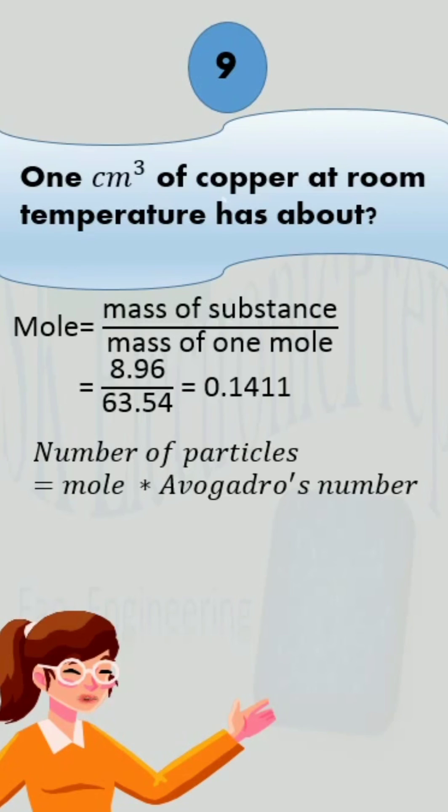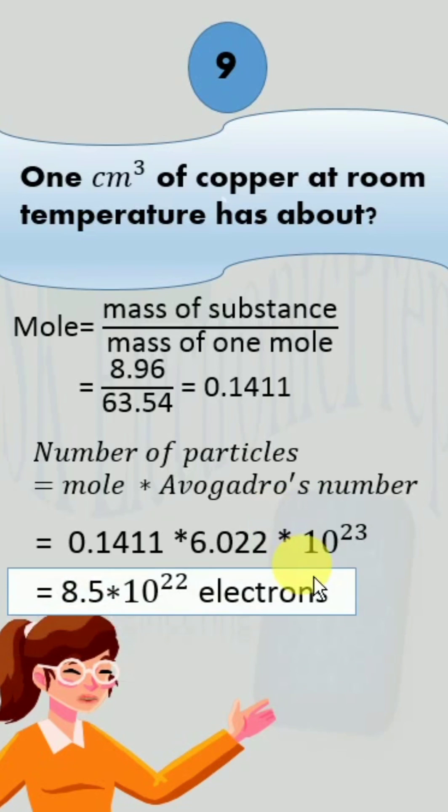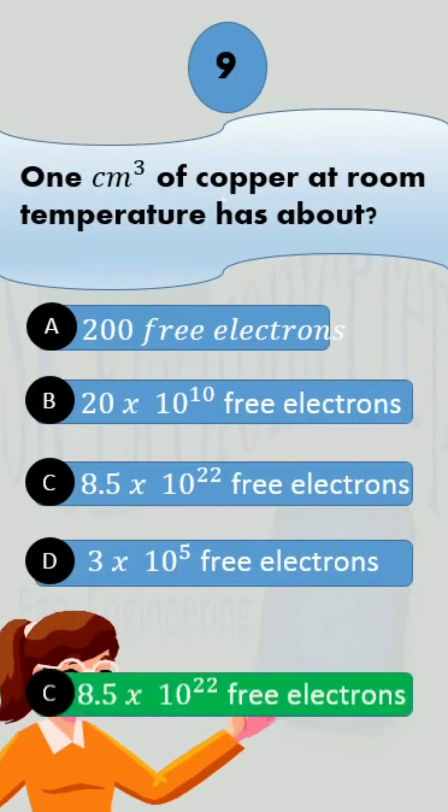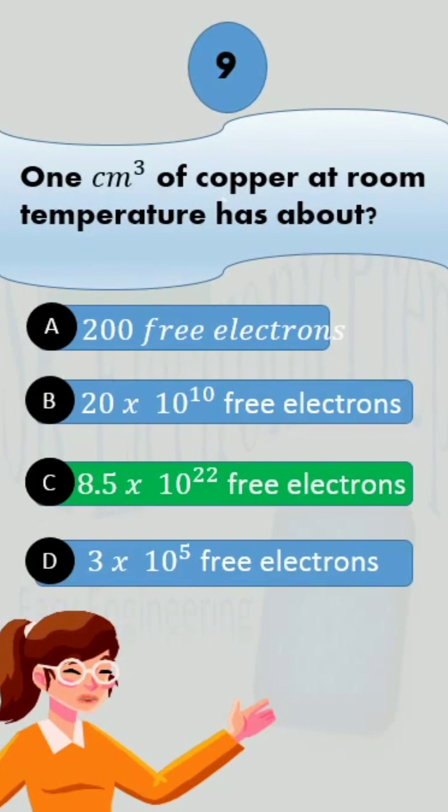We also know number of particles is equal to mole into Avogadro's number. So, putting the values 0.1411 and 6.02 into 10 raised to the power 23, we obtain 8.5 into 10 raised to the power 22, which is option C.